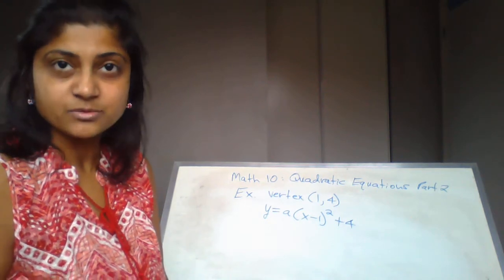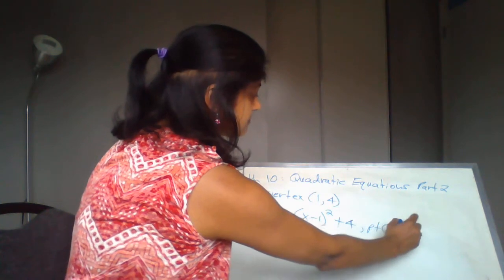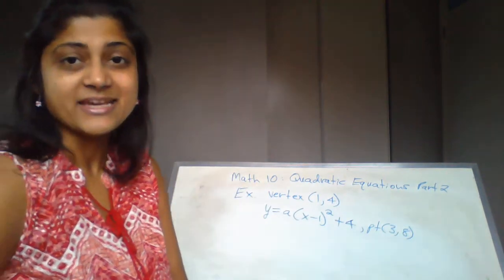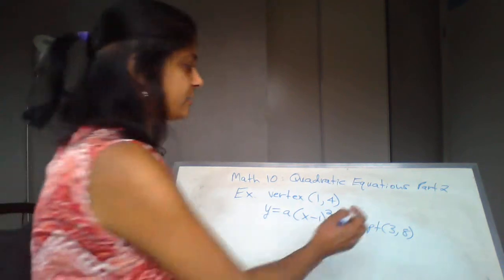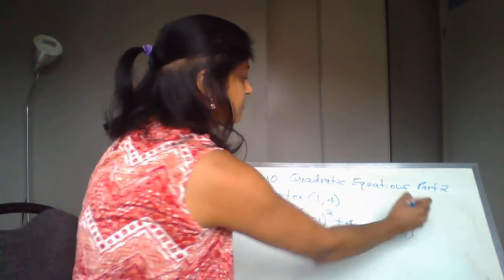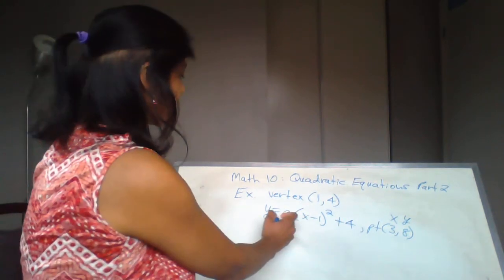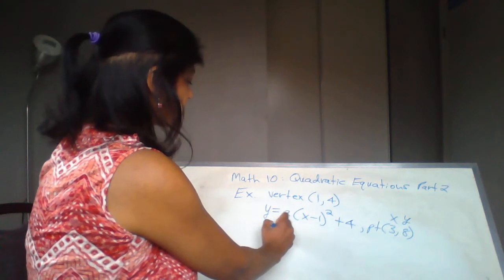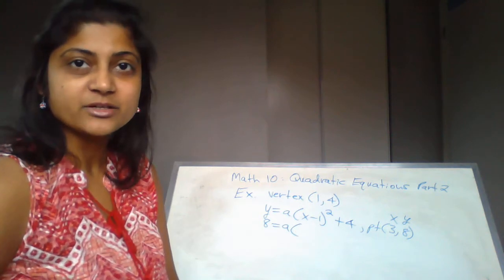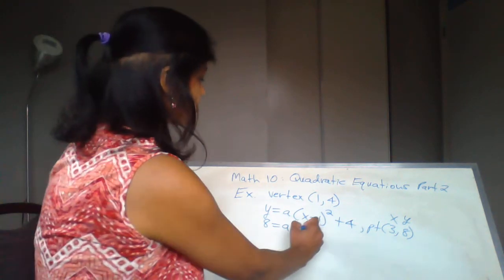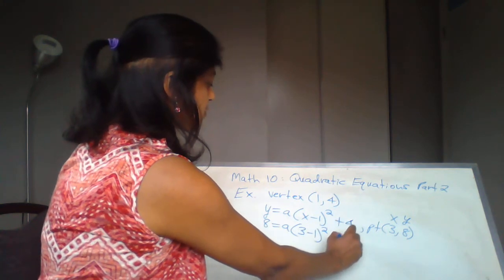We're plugging it into the vertex form. The quadratic is also passing through the point (3, 8). I'm going to use the x and y for the coordinate and plug it back into my formula. So the y value is 8 and the x value is 3, giving us: 8 = a(3 - 1)² + 4.